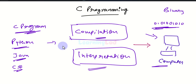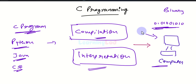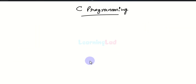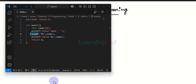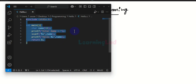In some other video we will talk about these two methods in more detail. For the C programming language, the compilation method is used — all the instructions are converted to machine code and then that is executed. So we write the instructions in C programming language, then use a compiler to translate the code from C to machine language or binary language, and then that is executed.